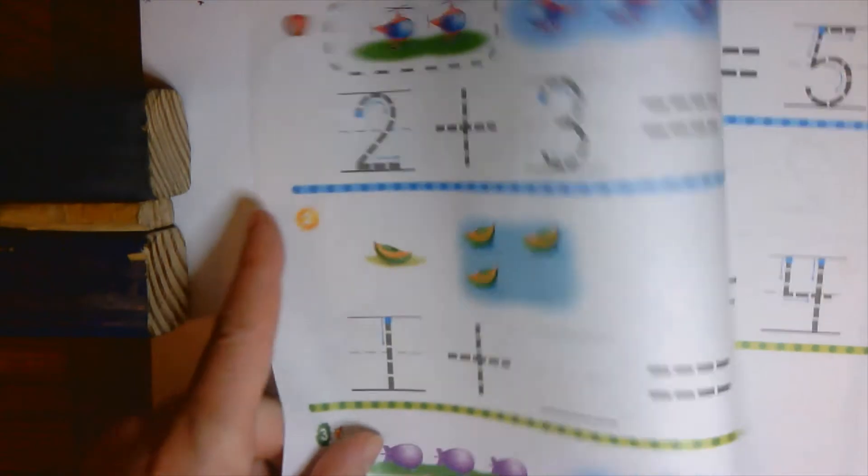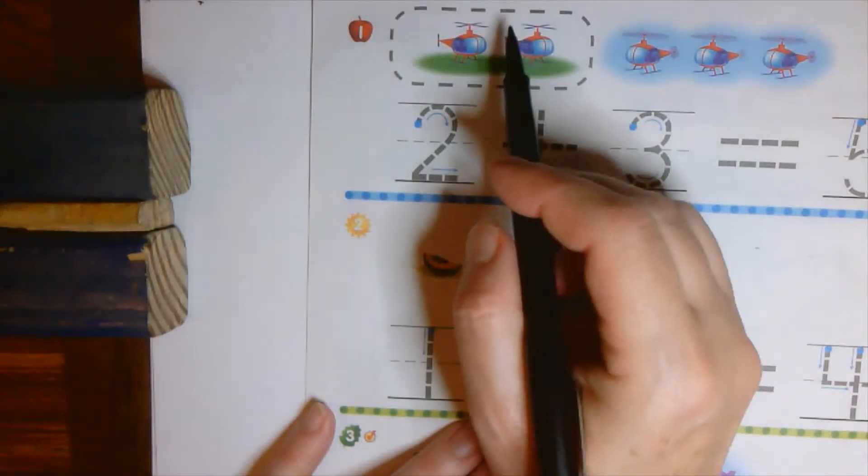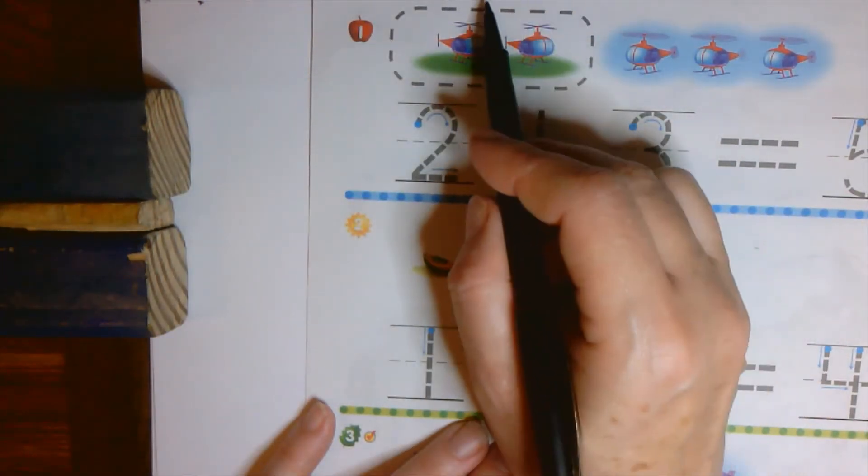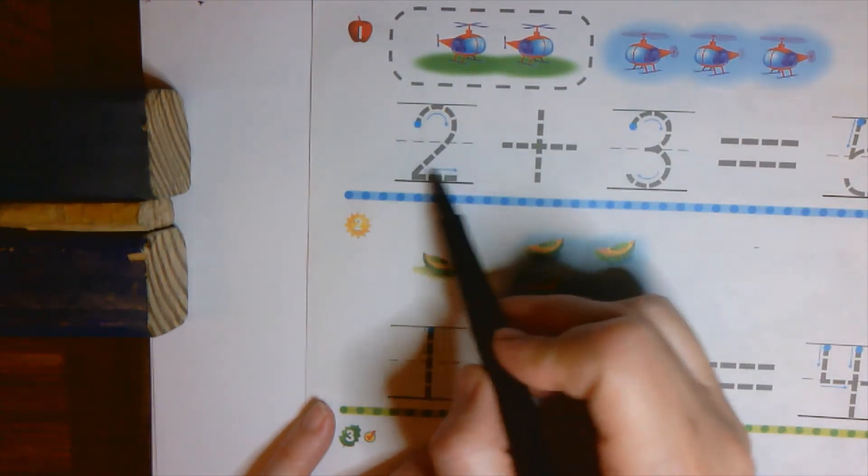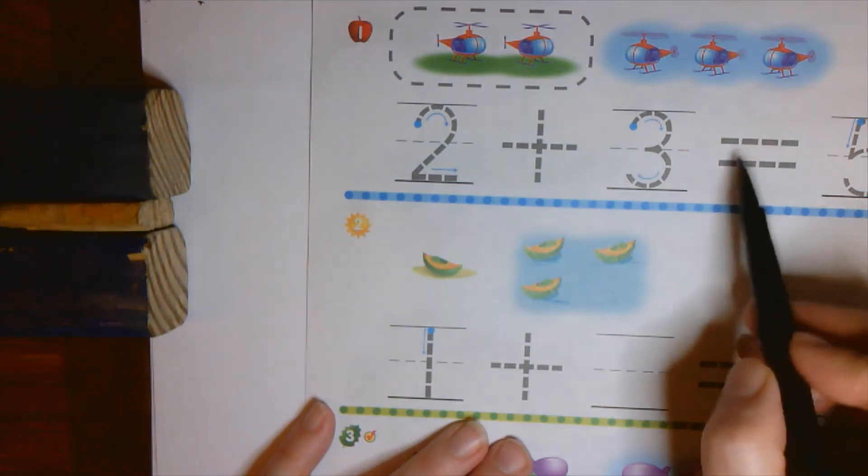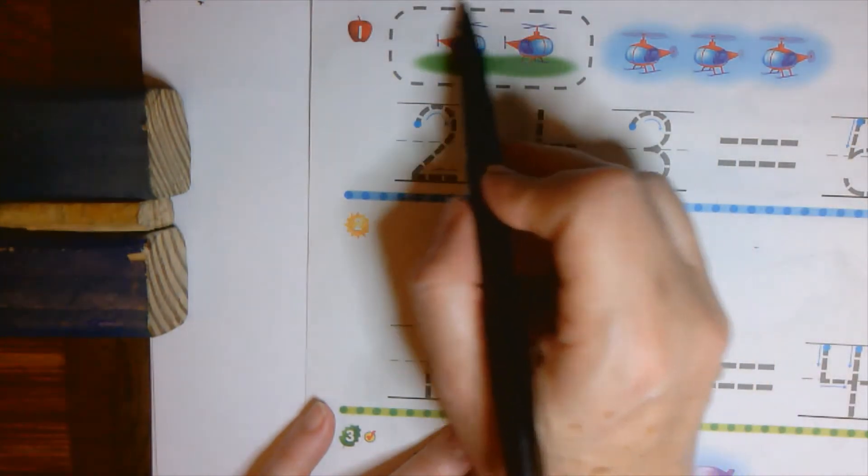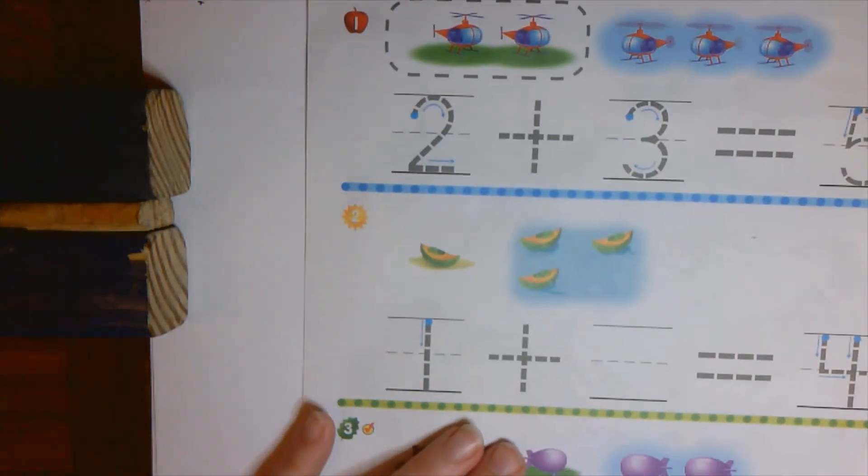All right, turn it over here. You can see they have circled the ones that they started with and then counted up the ones to add and put it here. So go ahead and trace these, circle the amount that got started with.